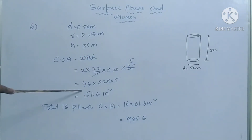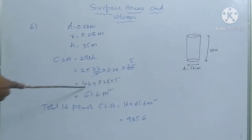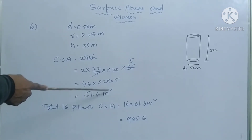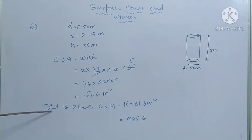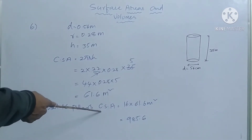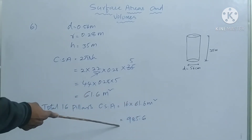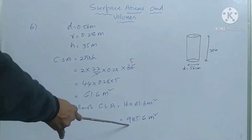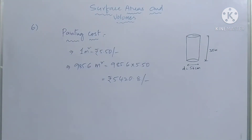So that equals 22 into 2, which is 44, into 0.28 into 5. Multiplying these terms gives 61.6 meters square. So the curved surface area of one pillar is 61.6 m². For total 16 pillars, curved surface area is 16 into 61.6 meter square, which equals 985.6 meter square.